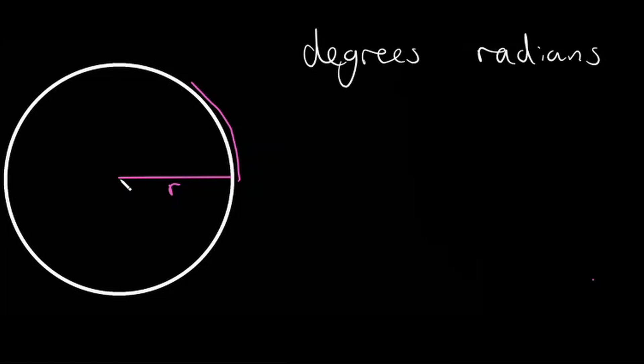one radian would be equal to, if we draw a line there, one radian will be equal to this angle here. So this angle would be measured as one radian.